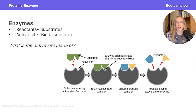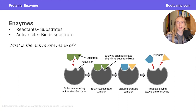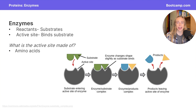A substrate is simply a reactant used by an enzyme. The active site on an enzyme is what binds the substrate. Remember enzymes are typically made out of protein, so amino acids make up the active site of an enzyme. These amino acids are responsible for weakly binding to our substrate molecules.